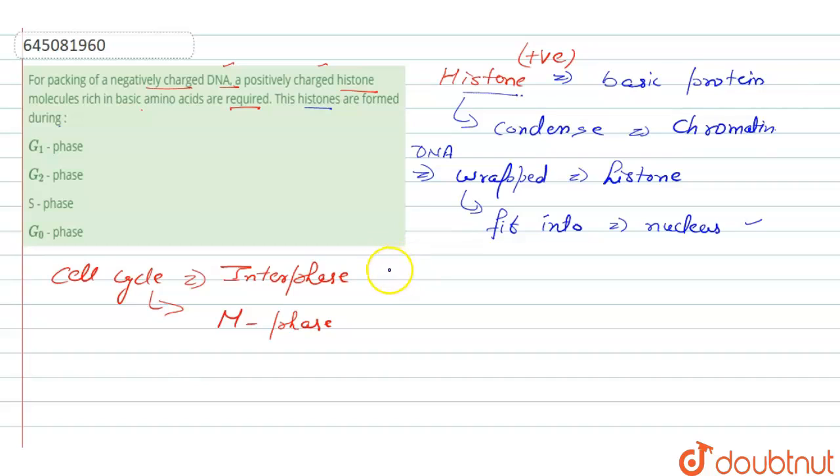So this interphase is further divided into three main phases: first is the G1 phase, then there is S phase, and then G2 phase.